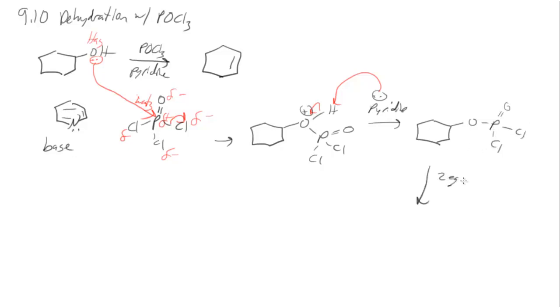And then we actually need a second equivalent of pyridine to come by and remove a proton from one of the carbons beta to the leaving group, which can cause this to leave. So what was the whole point of this? The whole point of this, phosphorus oxychloride, is just to activate alcohol to make it a good leaving group. And we get our product plus pO2Cl2-.